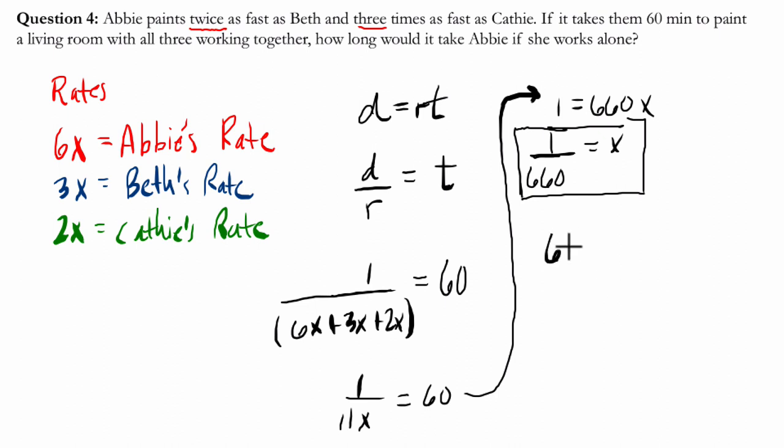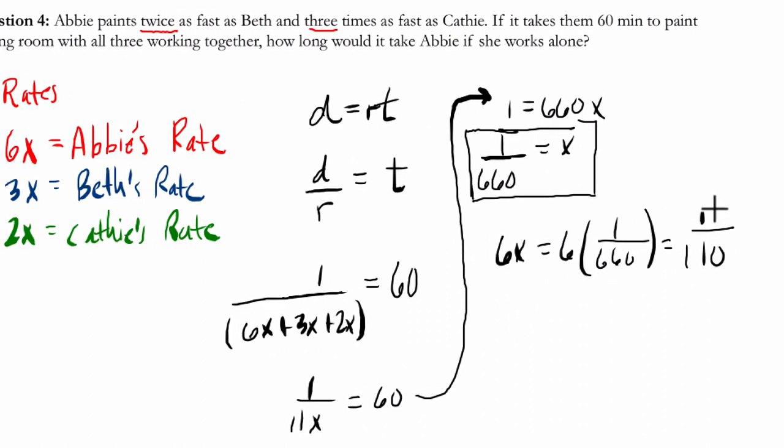Abby's rate is 6 times x, so it's 6 times 1 over 660. 6 goes into 660 110 times, so it's 1 over 110. This is Abby's rate. Now, if you think about what rate is, rate equals distance over time. So it's one room she's completing, and it's taking 110 minutes. This is the time right here. So we've solved the problem.